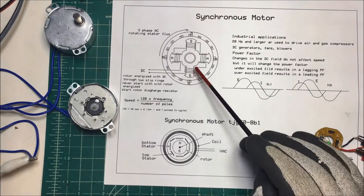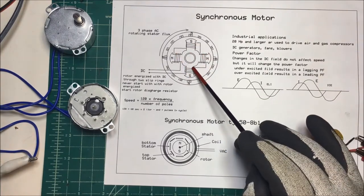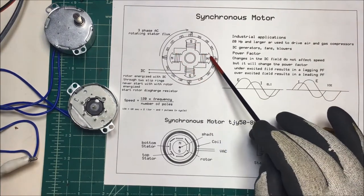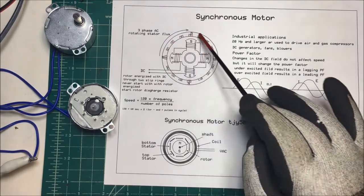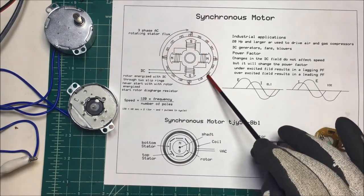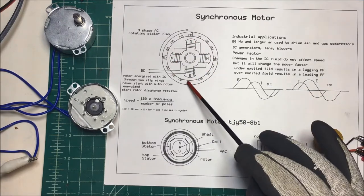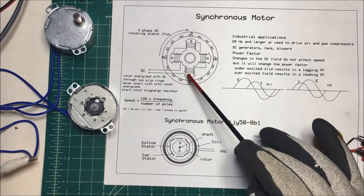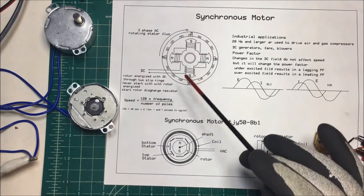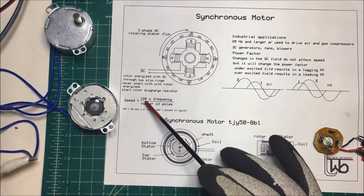So you set up this magnetic field in this rotor here, and that locks into this rotating flux around here, your three-phase rotating field, and it stays in sync with that. The speed is dependent on the frequency. For here it's 60 hertz, but to find the frequency it's 120 times the frequency divided by the number of poles.